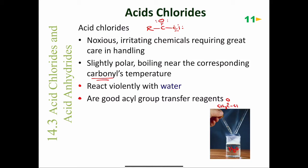Acid chlorides are good acyl group transfer agents. This whole functional group is called an acid chloride, but this part — just the carbonyl with the R group — is called the acyl group or the acyl portion. What we're going to see is that acid chlorides are good at transferring their acyl portions onto other molecules.